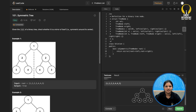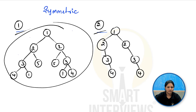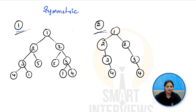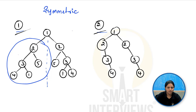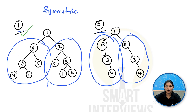The new problem gives you the root of a binary tree and asks you to decide whether it is a symmetric tree or not. Looking at two examples: tree 1 is symmetric because placing a mirror between the left and right subtrees shows the left subtree is a mirror image of the right subtree. So we can call it a symmetric tree.